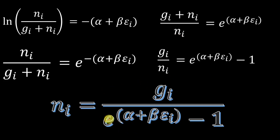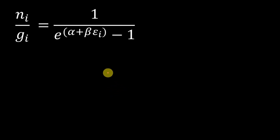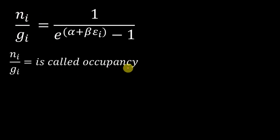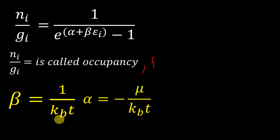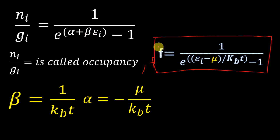We will derive alpha and beta after deriving the Fermi-Dirac distribution law, since they are the same for all three statistics — which is really cool. For now, let us see what form this takes when alpha and beta are substituted. As discussed in the statistical mechanics overview video, n_i/g_i is known as occupancy — the number of particles in each energy state. Beta equals 1/(k_B T) where k_B is the Boltzmann constant, and alpha equals minus mu/(k_B T), where mu is the chemical potential. After substituting, we get the Bose-Einstein distribution in terms of occupancy.